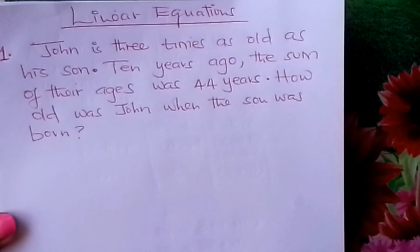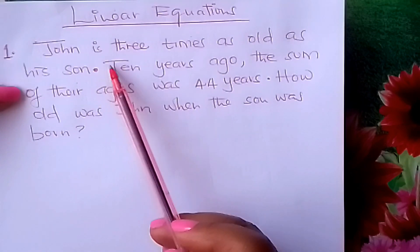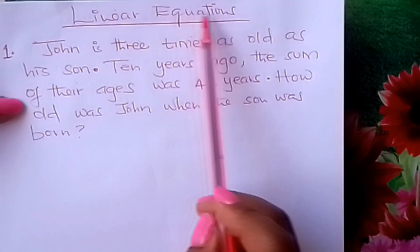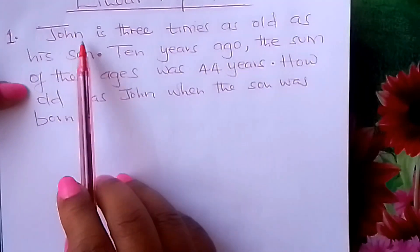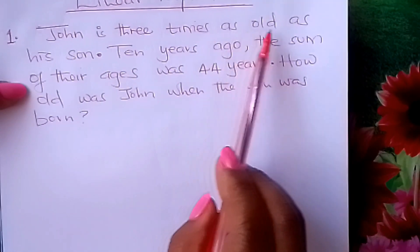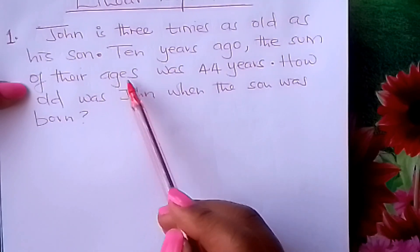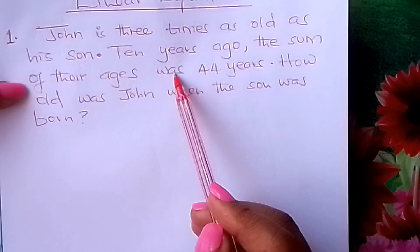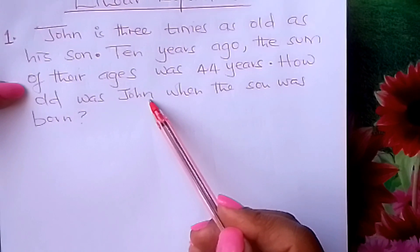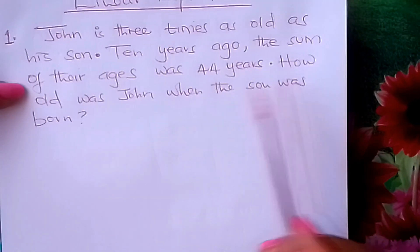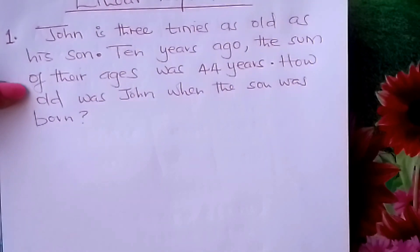Welcome learners to Form 1 Mathematics. Today I would like us to look at this question on linear equations. The problem states: John is three times as old as his son. Ten years ago, the sum of their ages was 44 years. How old was John when his son was born?